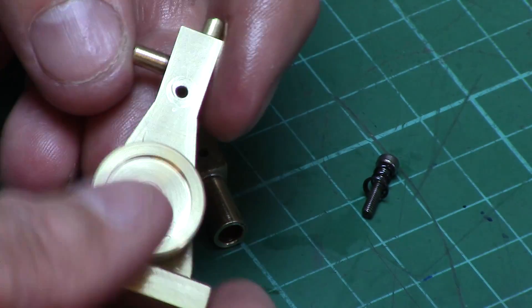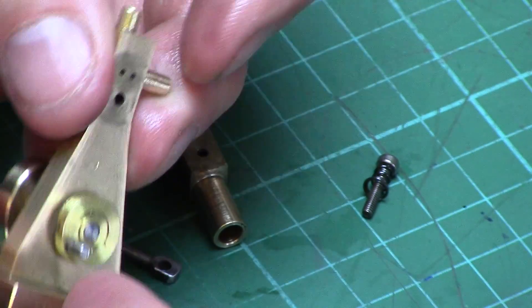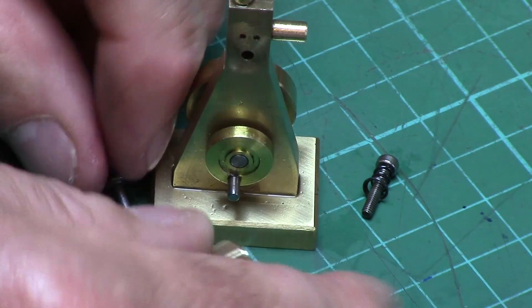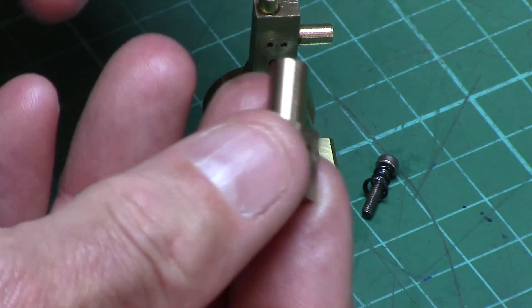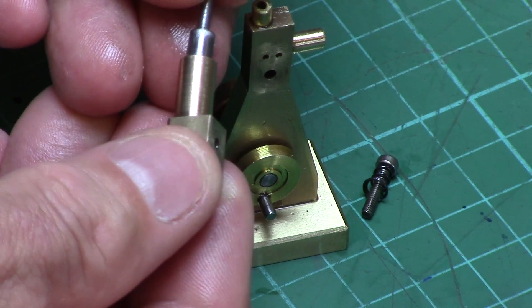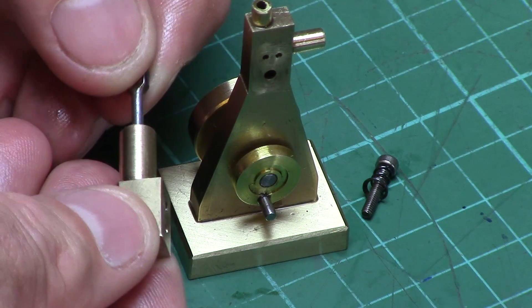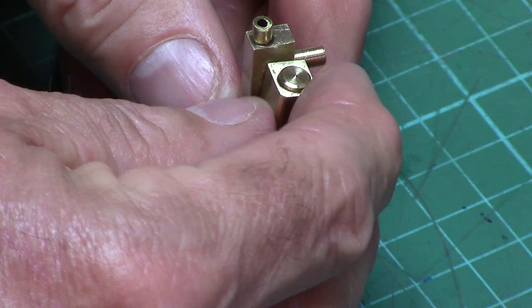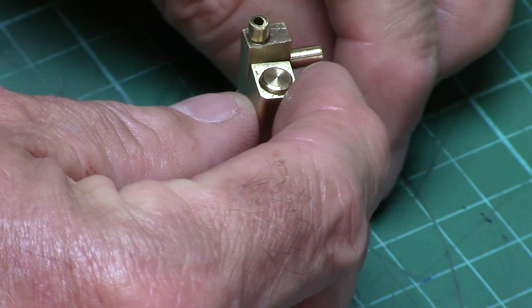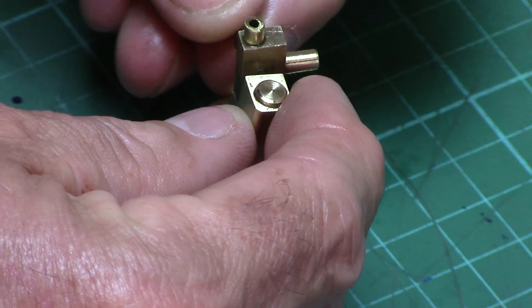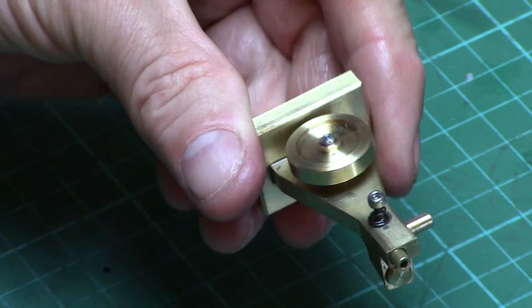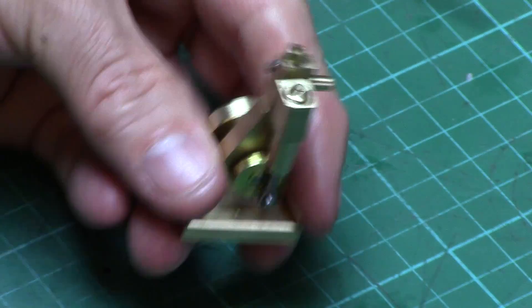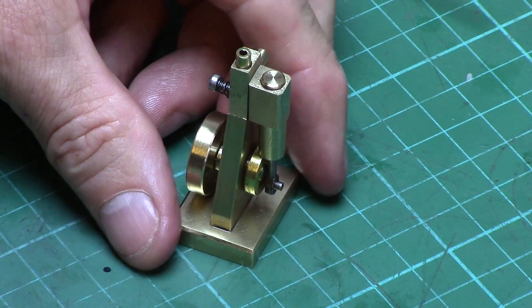The flywheel is 18mm, or just under 3/4 of an inch, and 5mm wide. The crankshaft was made from 3mm silver steel stock and this runs inside a 6mm bronze bushing fitted through the engine chassis. The engine was then fixed to a small brass base with M3 screws from the underside.